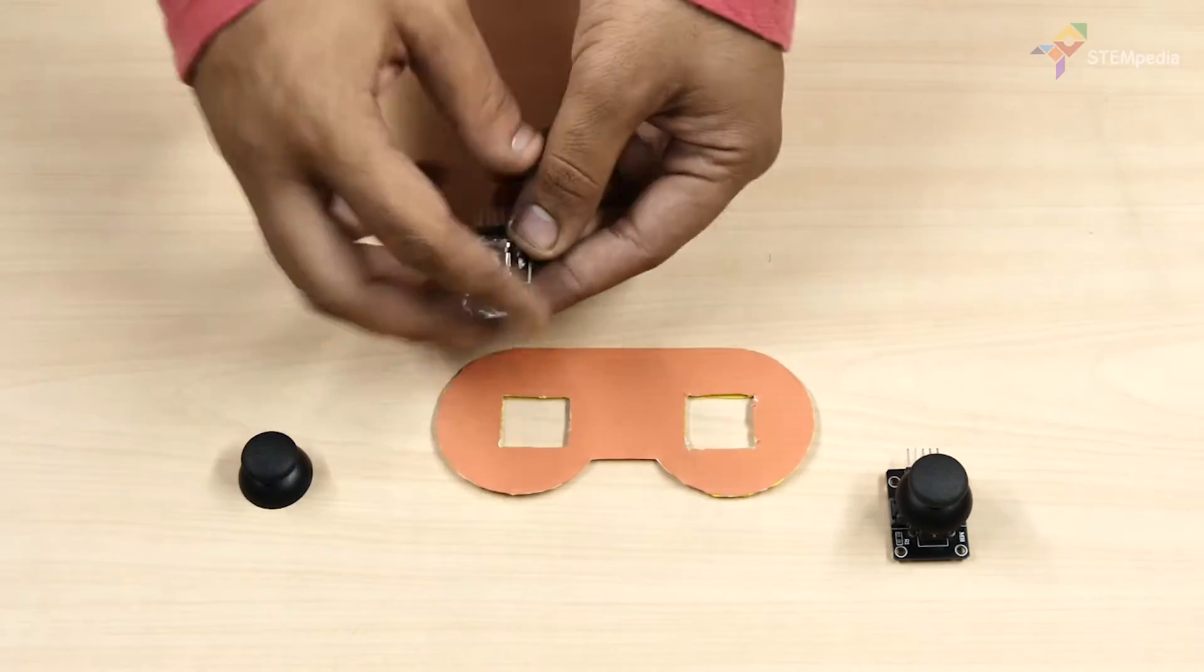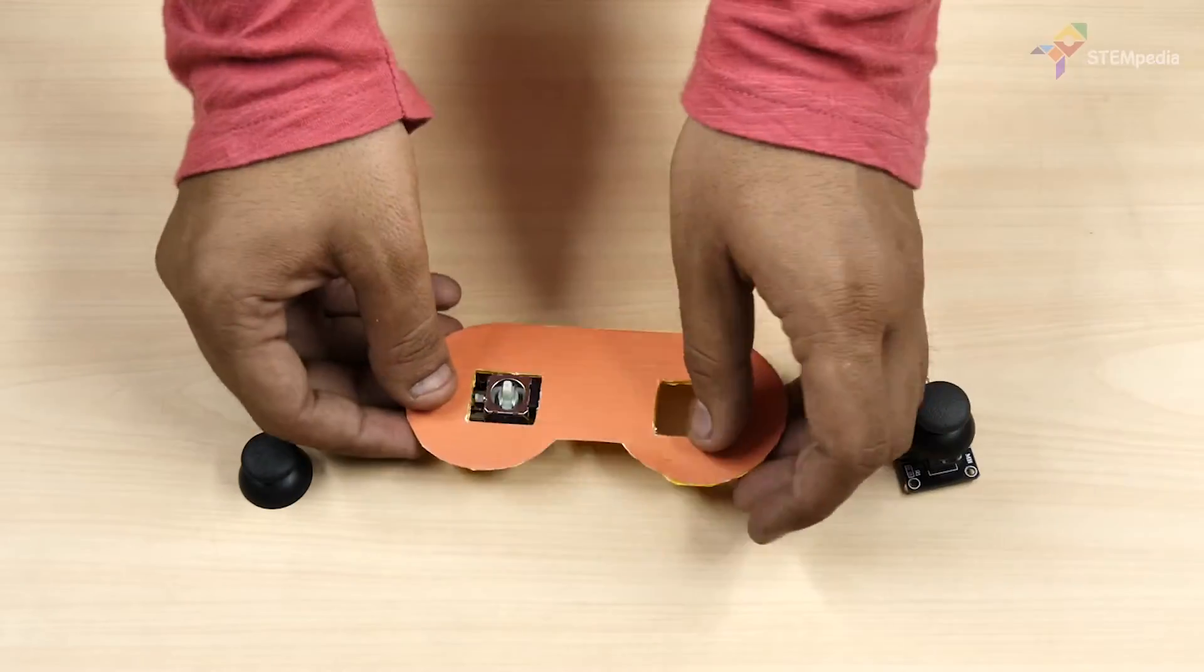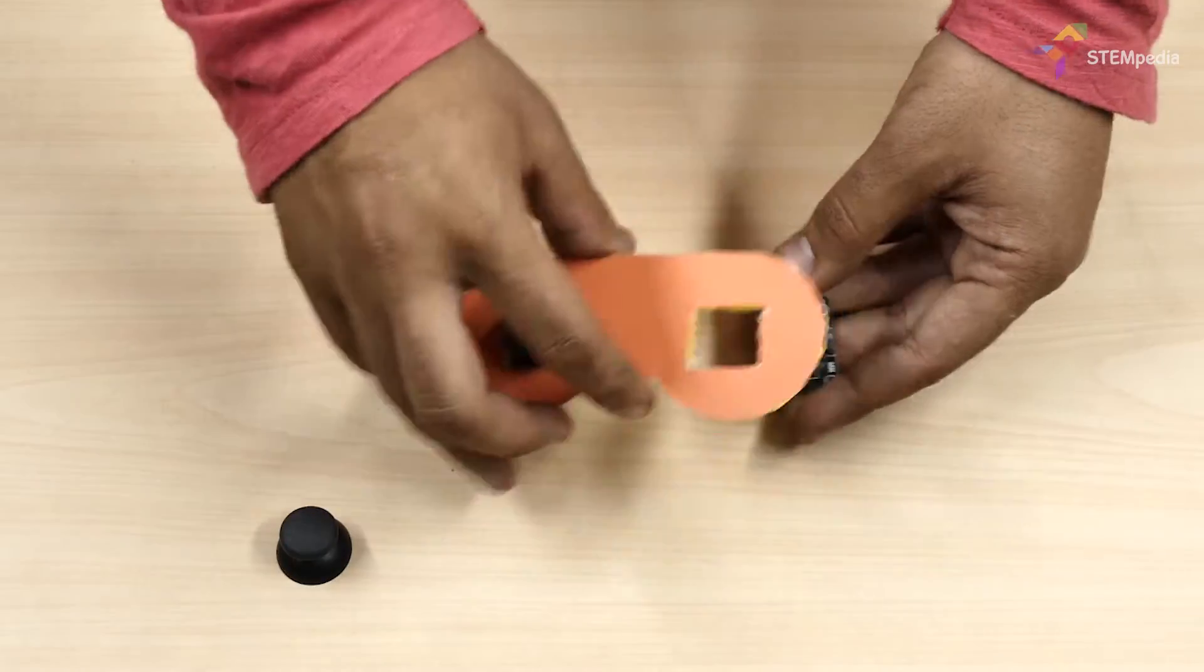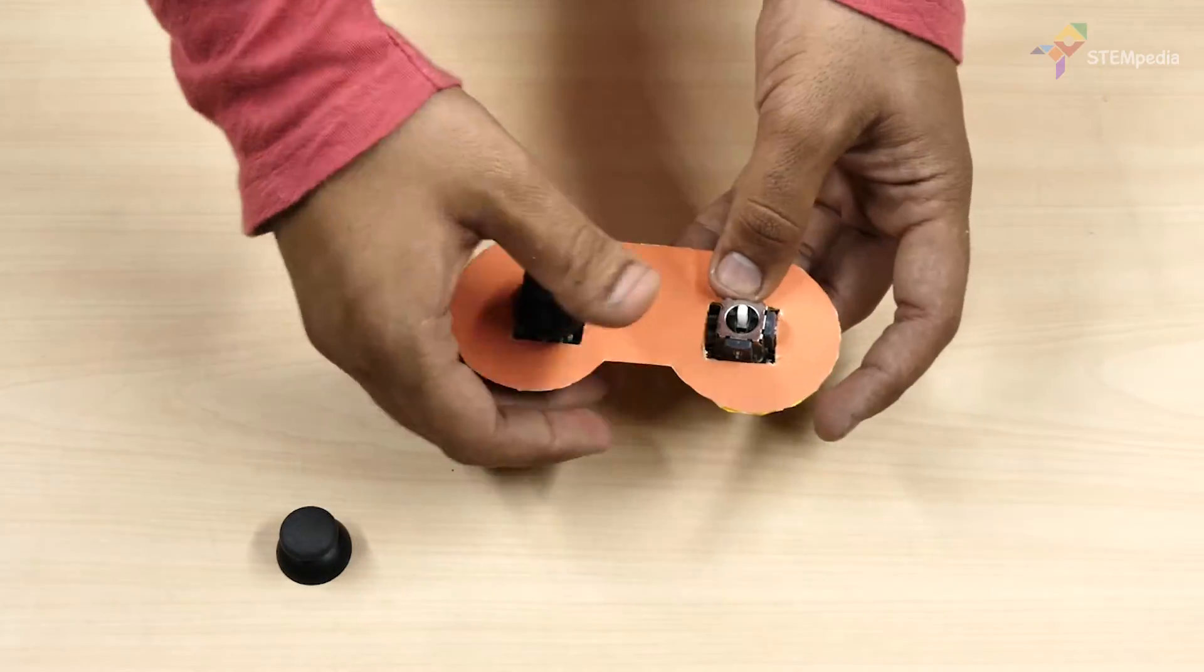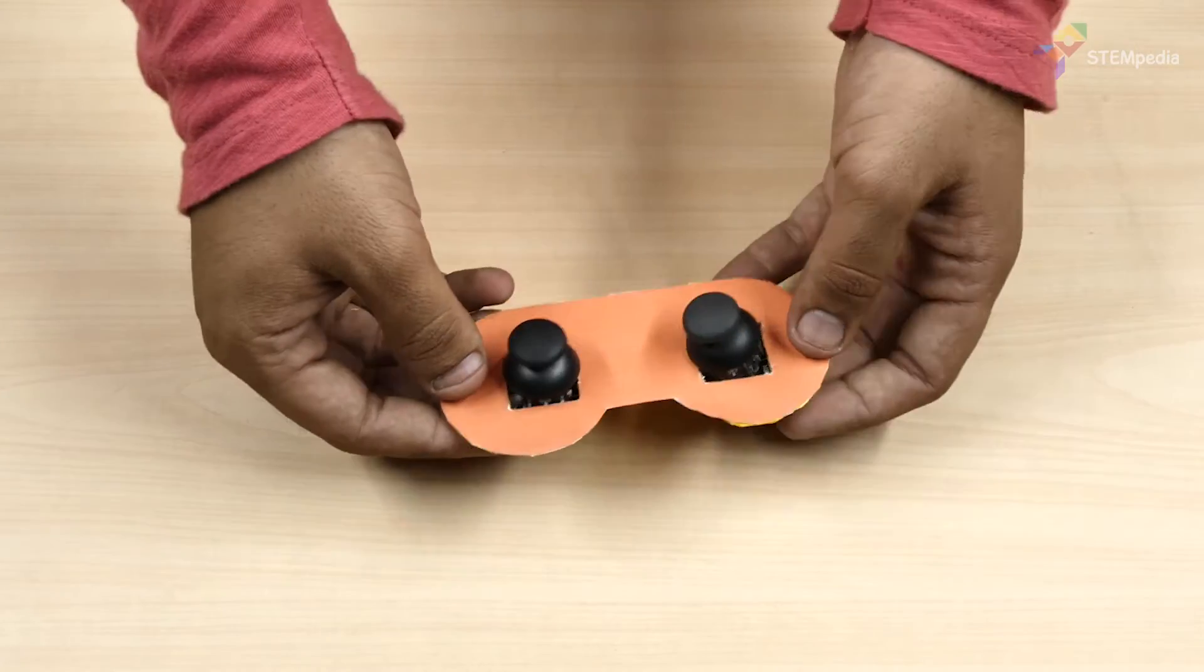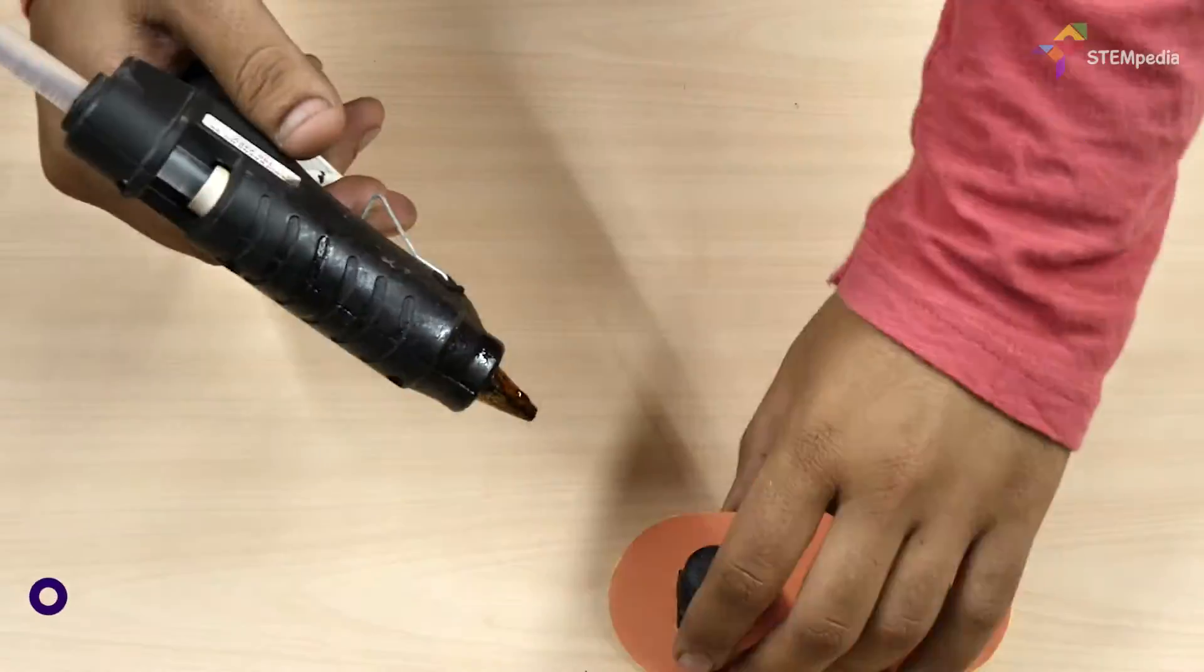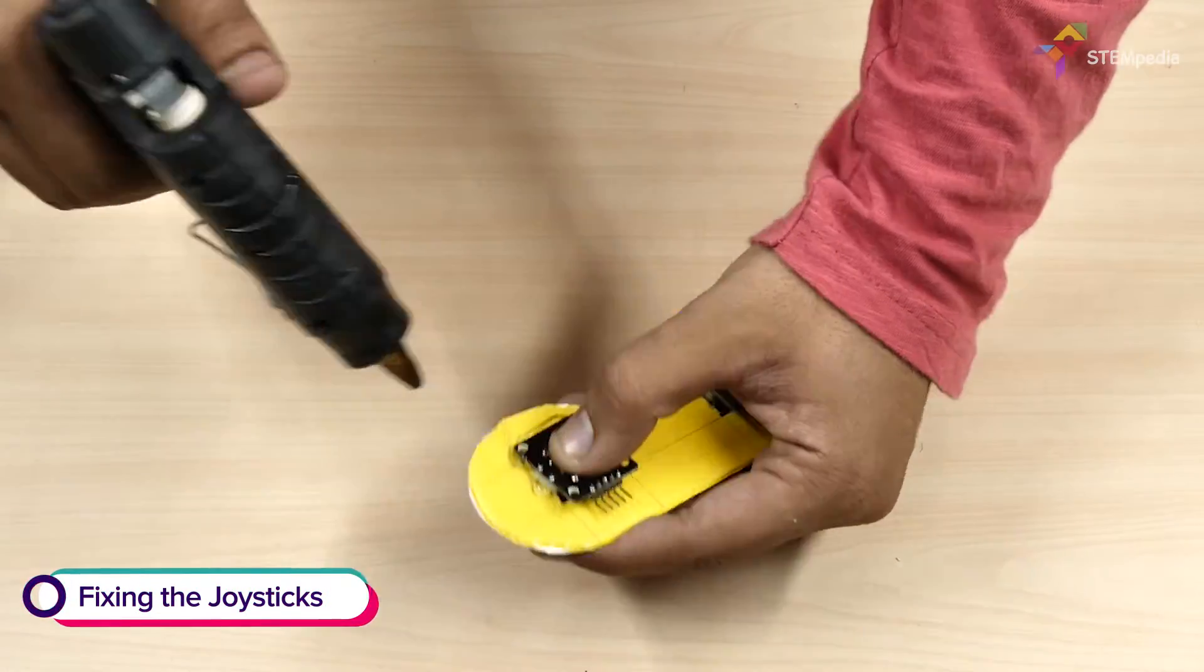Now, take the joysticks and remove their caps. Insert the joysticks from below and place the caps back from the top such that the headers on the joysticks point above. Use hot glue to hold the joysticks firmly in their place.